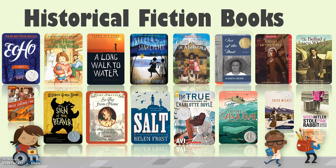Salt by Helen Frost actually takes place in Fort Wayne, Indiana, which is near where we are here in Michigan. The True Confessions of Charlotte Doyle is also a Newbery Honor winner — it's about a girl who is sailing on the open seas during the 1850s. Heart of the Samurai is about a Japanese boy. Paper Wishes is about the internment of the Japanese during World War II. Another great Holocaust book is When Hitler Stole Pink Rabbit by Judith Kerr.